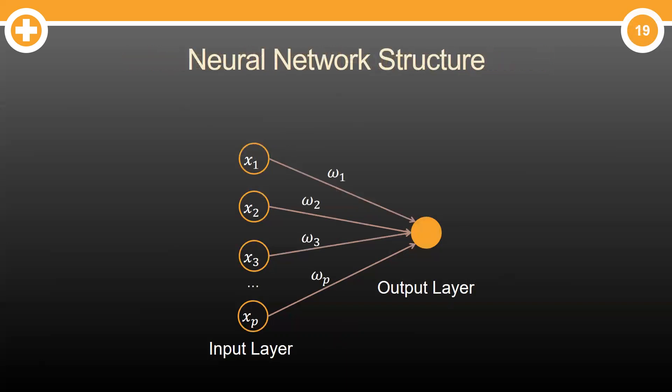These layers are connected through a series of weights. We apply a weight to each input. Then we're going to perform a linear combination of these inputs and weights, put them together through optimizing these weights to best predict the target. Now, you have your most basic neural network.